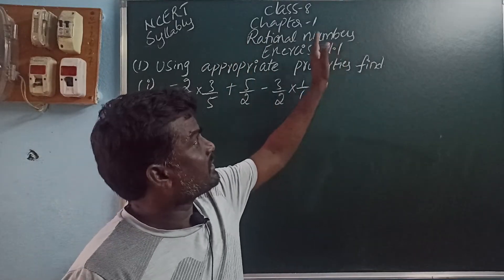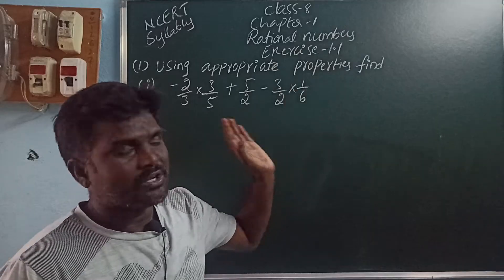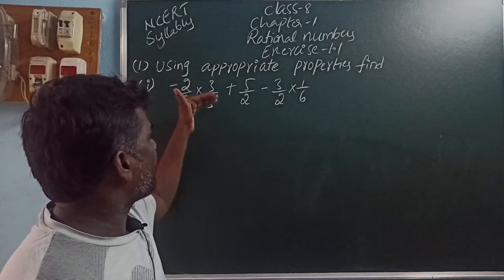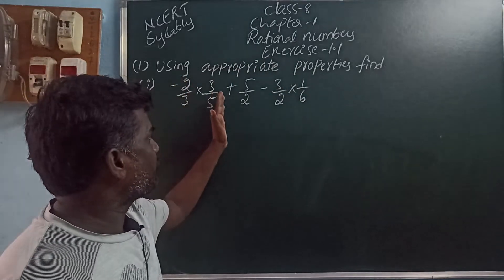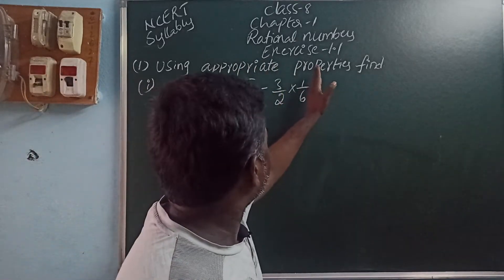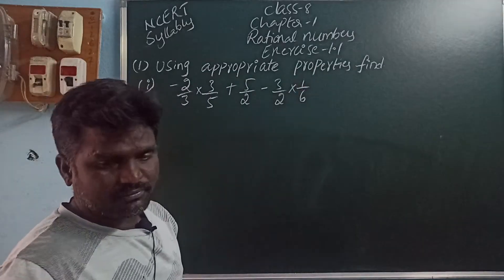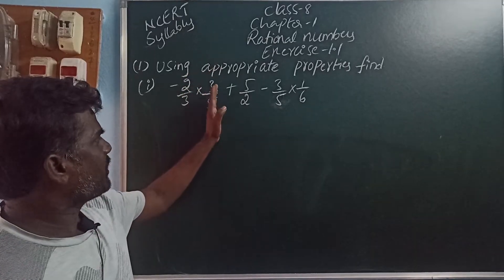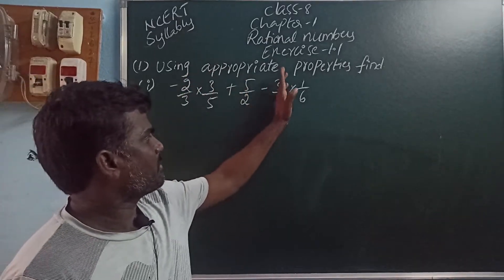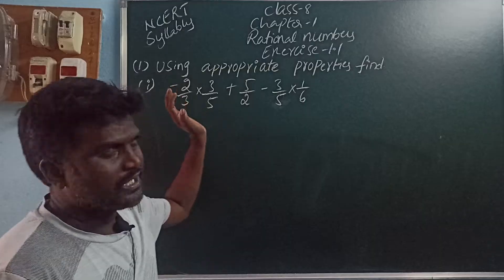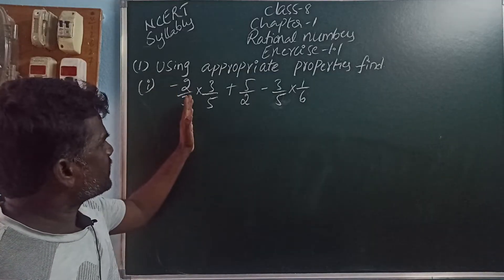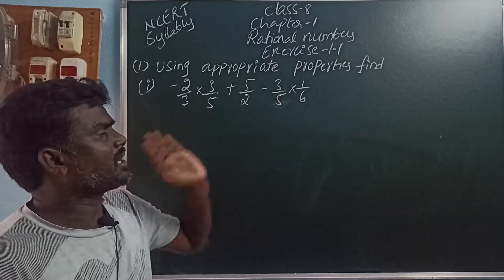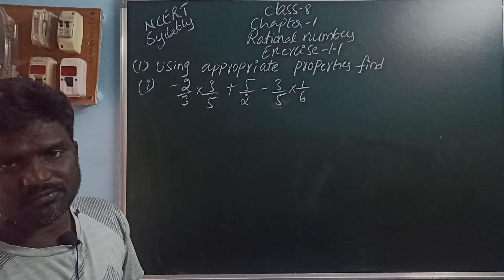In the last video, I was explaining Rational Numbers with examples. Now Exercise 1.1, first question: using appropriate properties, find minus 2 by 3 into 3 by 5 plus 5 by 2 minus 3 by 5 into 1 by 6. When you observe this, the first term is 3 by 5 and the last term is also 3 by 5.